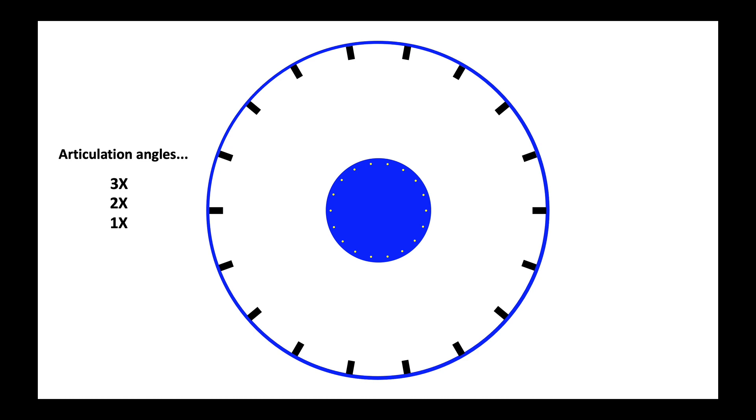And we're going to look at what some of these wheels would look like with articulation angles and crossings of three cross, two cross, and one cross.